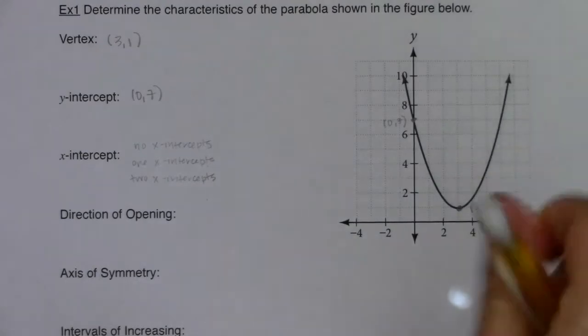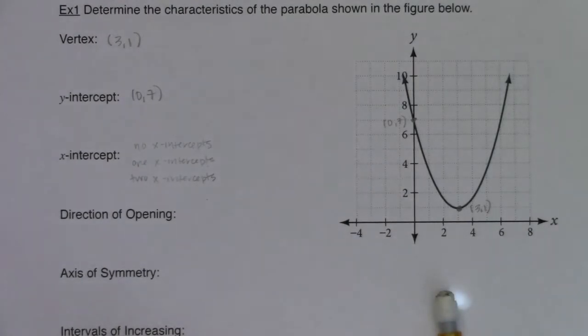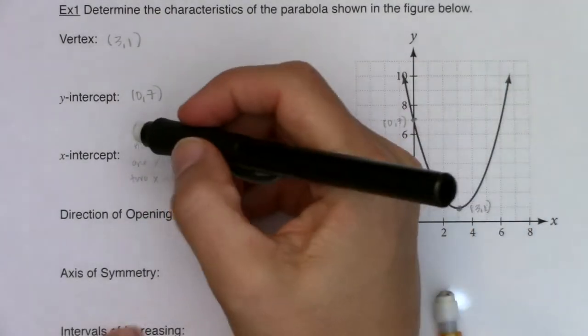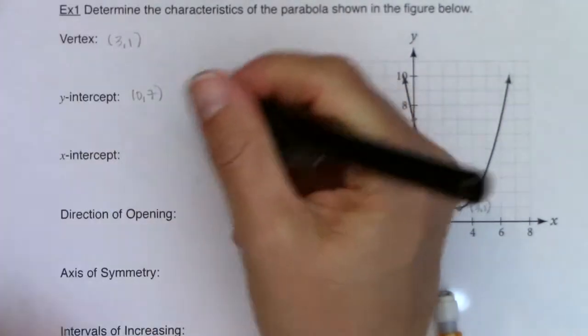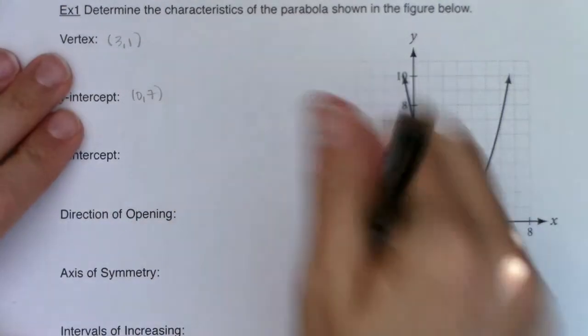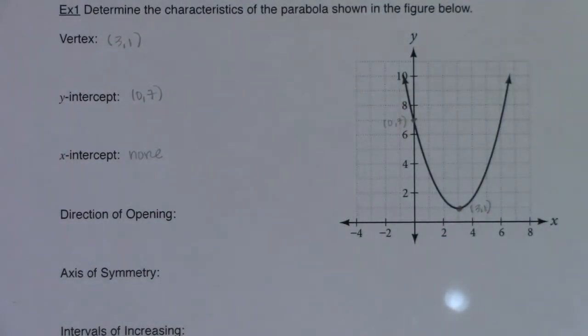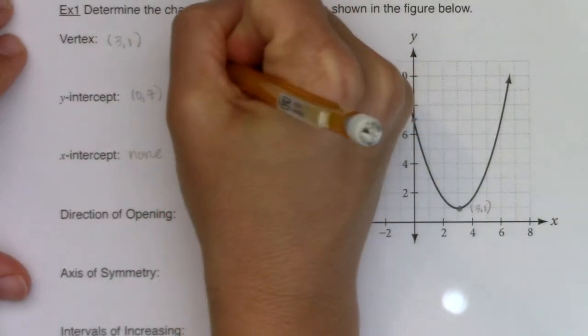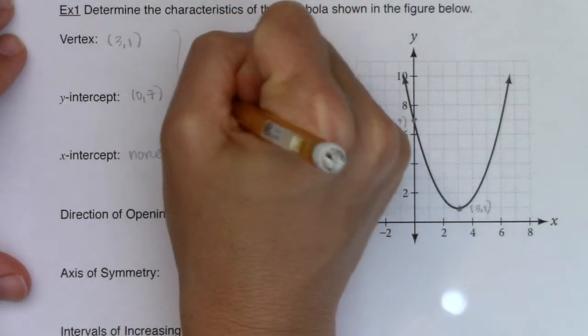X-intercepts are where your graph crosses the x-axis. And if I look here, my graph doesn't cross the x-axis. So the answer to this characteristic is there are none. And we'll relate that back to how the discriminant of this parabola is negative, but we're not there yet. We'll get there on the next example. So I would just say none. My parabola doesn't cross the x-axis. Now if it did, you would owe me ordered pairs. So these first three traits or characteristics, these are points on the graph, so you owe me ordered pairs.